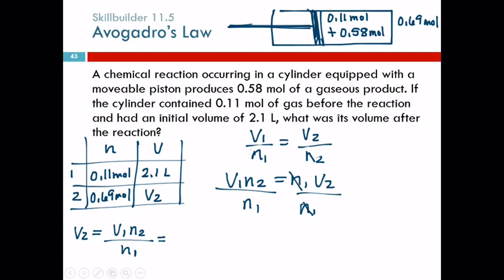So, volume 1 2.1 liters, N2 0.69 moles divided by N1, divided by N1 0.11 moles. Moles cancel out.